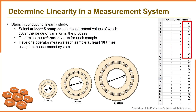Have one operator measure each sample at least 10 times using the measurement system. Here, the ball bearing with diameter 2 mm is measured 12 times, and the same for the 4, 6, 8, and 10 mm. In this example, the engineer wants to assess the linearity and bias of a measurement gauge used to measure inner diameters of bearings. The engineer chooses 5 parts representing the expected range of measurement — 2, 4, 6, 8, and 10 mm — and one operator randomly measured each part 12 times.